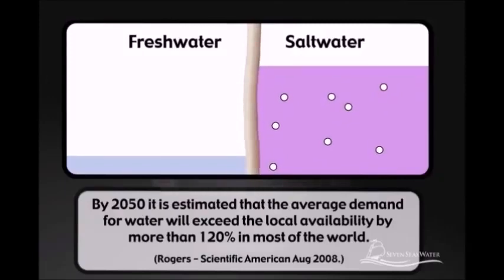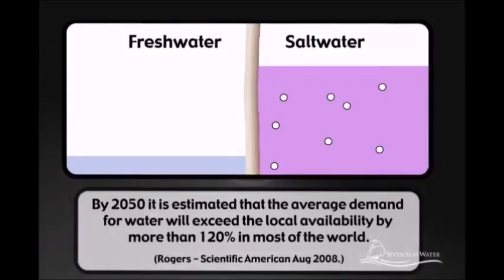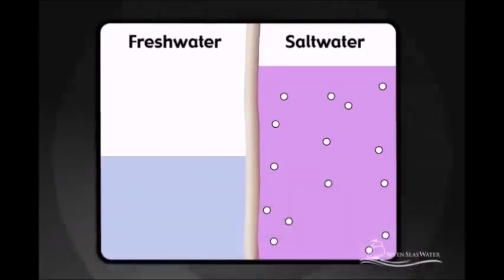The direction of flow through the membrane is from a less concentrated solution, such as fresh water, to a more concentrated solution, such as seawater, until equilibrium is reached.